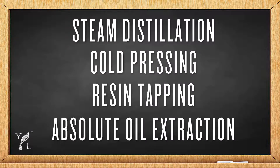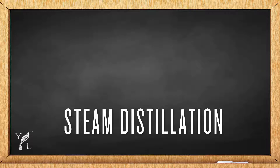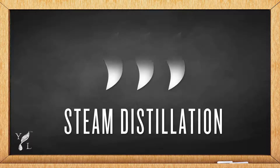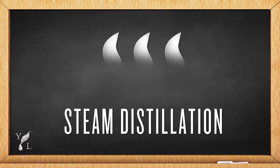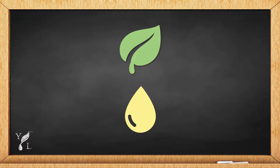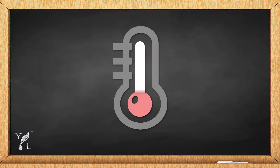Let's start with the most common of all the essential oil extraction methods, which is steam distillation. This process allows us to extract essential oils from very delicate plant materials. During the process, it's critical to control temperature and pressure to avoid burning the oils during distillation.